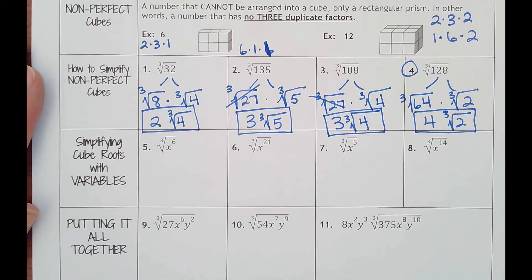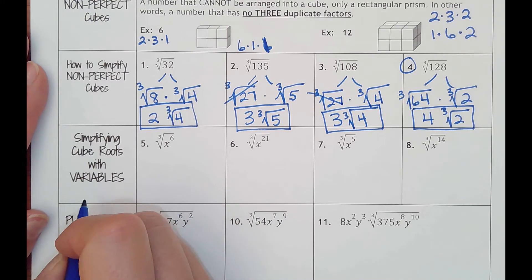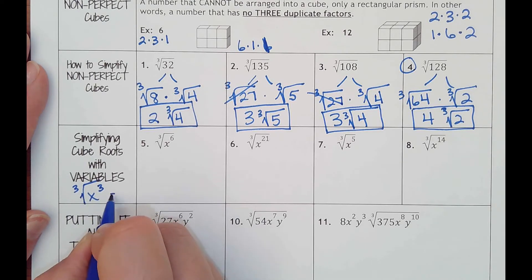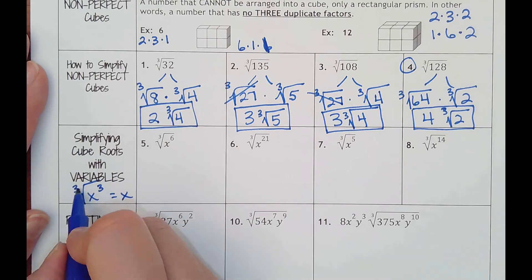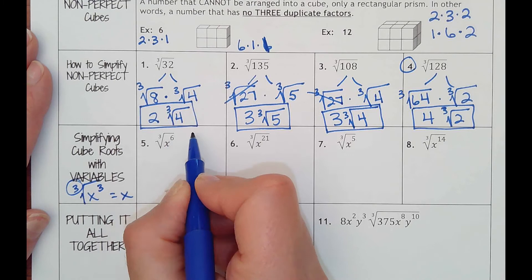Now simplifying cube roots with variables. Well, if with a square root we wanted something square to cancel, now if I were to have something being cubed, a cube root and a cube cancel each other out and it would just be x. So you're looking for sets of three since that's our index.